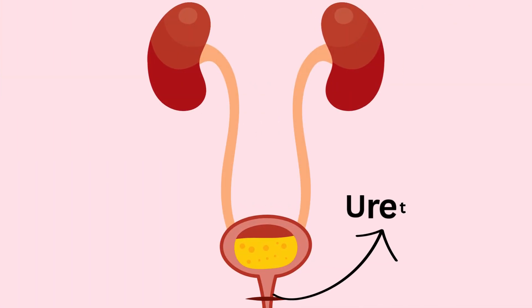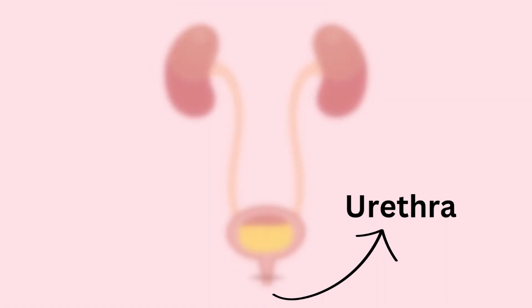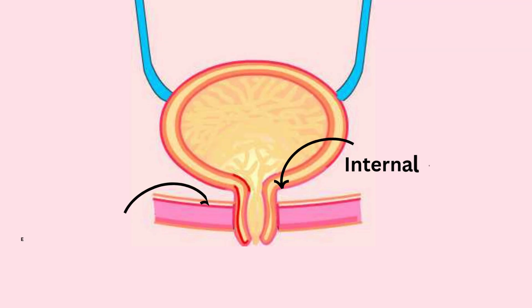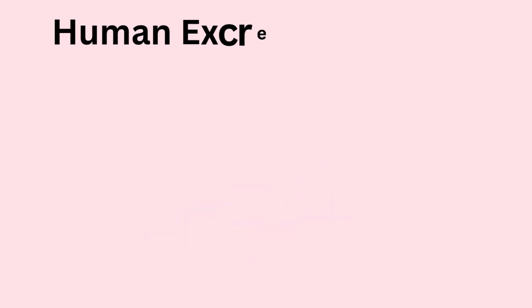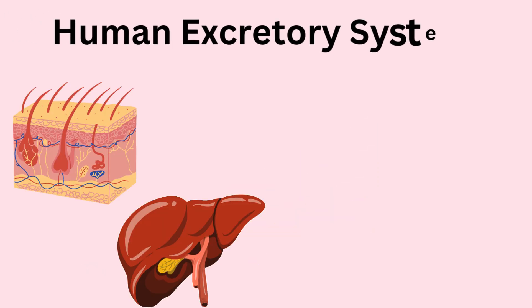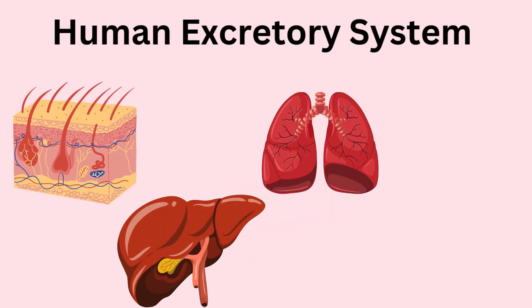Finally, the urethra, a tube that carries urine from the bladder out of the body. Sphincter muscles act as gates, relaxing during urination to let urine flow out. Together, these organs ensure waste is safely transported and expelled, keeping your body toxin-free.